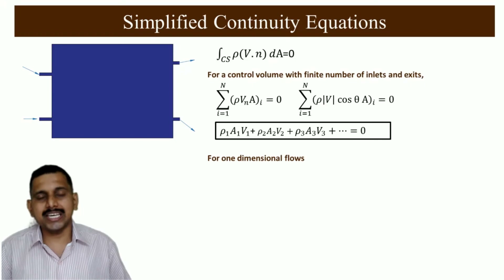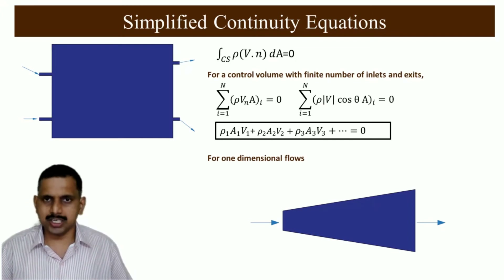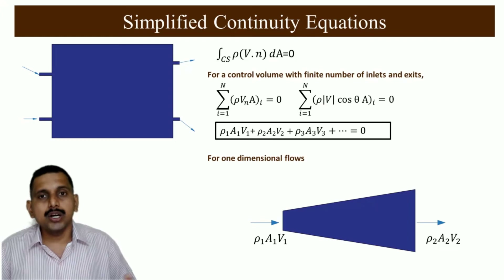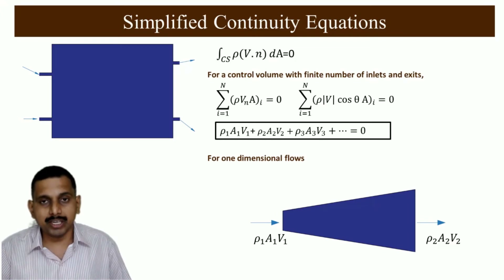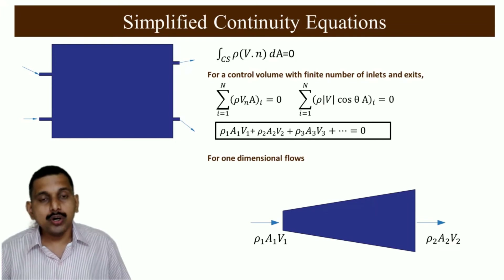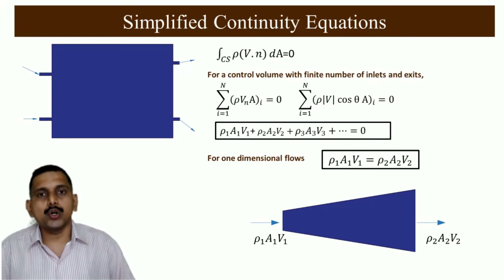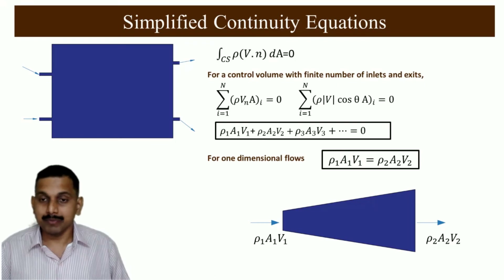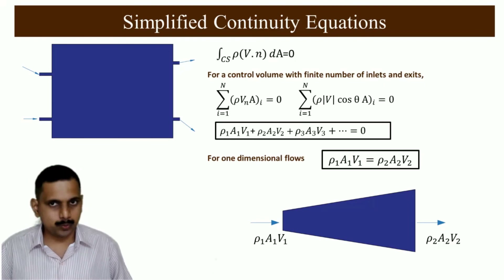For one-dimensional flow, such as pipe flow where the area is varying, the mass flow rate can be written as ρ₁A₁V₁ and ρ₂A₂V₂. For steady flow, these must be equal: ρ₁A₁V₁ = ρ₂A₂V₂. This is frequently asked in GATE and competitive exams. If density is constant (incompressible), this simplifies to A₁V₁ = A₂V₂, which is the commonly known continuity equation.